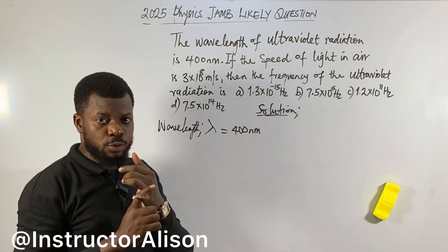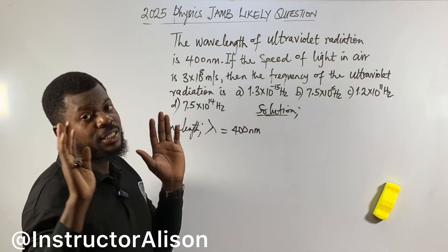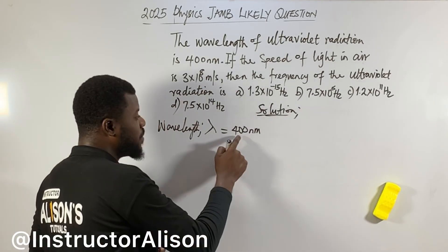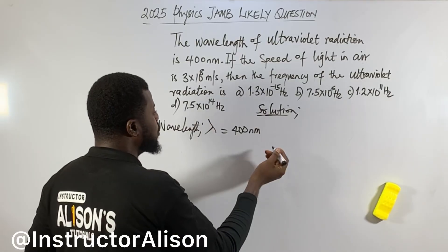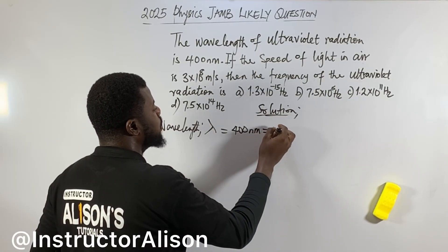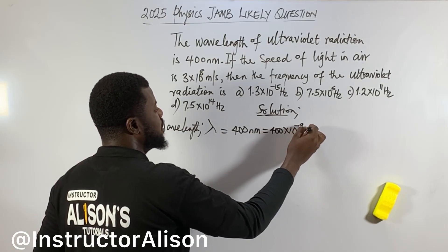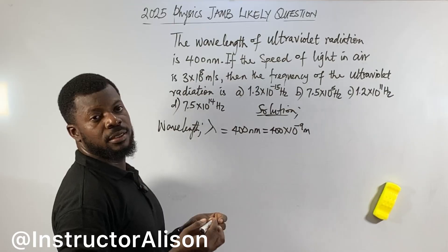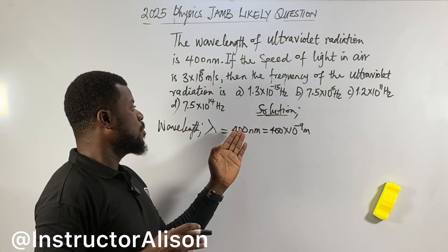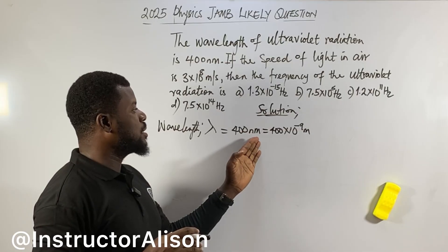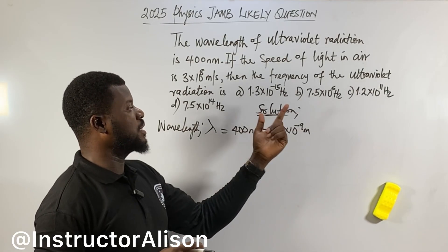...nano — you know we get micro, 10 to the power of minus 6; we get nano, 10 to the power of minus 9. So convert this one from nanometers to meters. I'm just saying this will equal 400 times 10 to the power of negative 9 meters. So you convert from 400 nanometers to 400 times 10 to the power of negative 9.